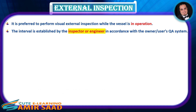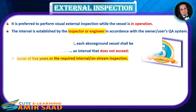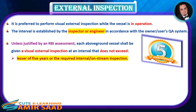External inspection: it is preferred to perform visual external inspection while the vessel is in operation. The interval is established by the inspector or engineer in accordance with the owner-user's QA system. Unless justified by an RBI assessment, each above-ground vessel shall be given a visual external inspection at an interval that does not exceed the lesser of 5 years or the required internal on-stream inspection.